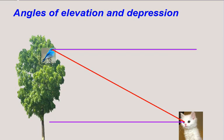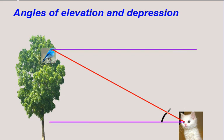Another concept in solving trigonometry problems is the concept of angles of elevation and depression. Consider a cat looking at a bird in a tree. The cat normally looks in the horizontal direction, but when it sees the bird it looks up — the angle by which the cat lifts its eyes is called the angle of elevation, let's call it theta. As for the bird, it normally looks horizontally, but when it sees the cat it looks down — that angle is called the angle of depression.